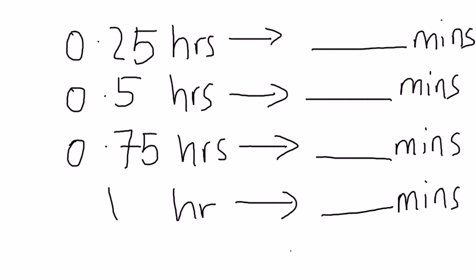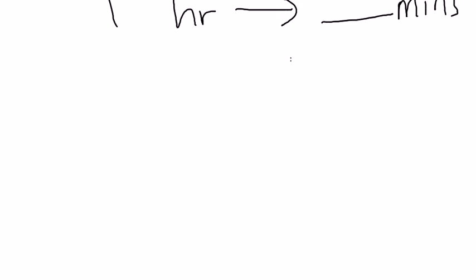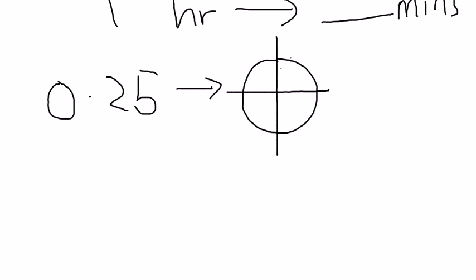Now, one quarter of the clock, if you draw the clock, so let me push it up and show you 0.25. If you draw a clock, which is the shape of a circle, and you split them into one quarter, automatically you know, because a clock goes this way, that this clock will be at 15 minutes.